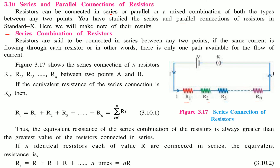In a series combination of resistors, resistors are said to be connected in series between any two points when the same current passes through each. The same current I passes through R1, R2, R3, and Rn, meaning there is only one path available for the flow of current. The equivalent resistance Rs is given by the sigma from i=1 to n of Ri.